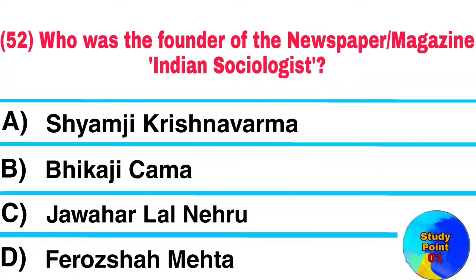Question No. 52. Who was the founder of the newspaper/magazine Indian Sociologist? Answer: Shyamji Krishnavarma.